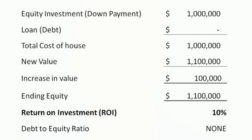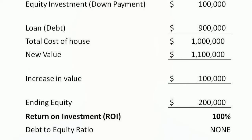But if instead you'd only put $100,000 down and borrowed $900,000 when you bought the house, the $100,000 increase in value would represent a 100% return on your equity investment of $100,000.